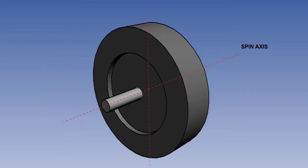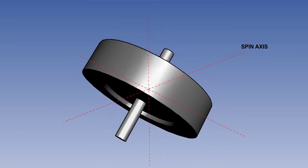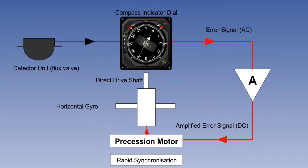Gyro wander can take two forms: drift and topple. The tendency to drift is overcome, as already described, by slaving the gyro to the flux valve output, thereby making it a tied gyro in azimuth.